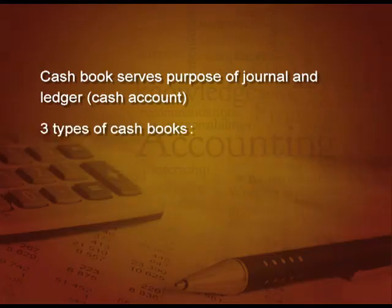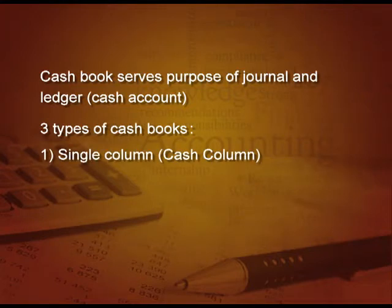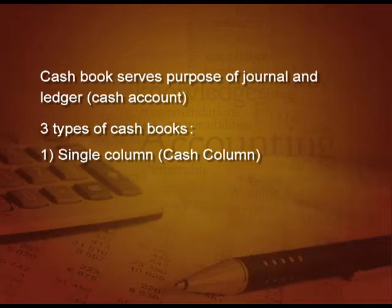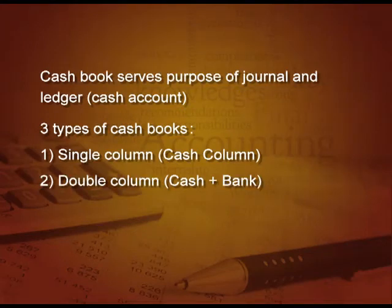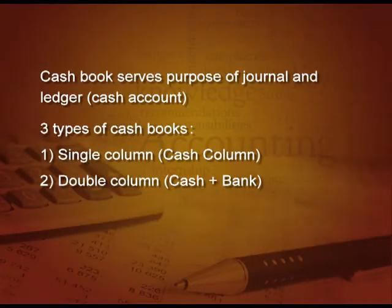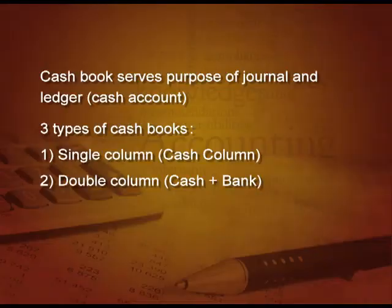Cash book serves the purpose of journal as well as ledger. Ledger means cash account. There are three types of cash book. First, single column cash book, in which there is only one column — that is the cash column. Next, double column cash book, in which we have two columns — cash as well as bank. And the third type is petty cash book, in which we record all the petty, small expenses.